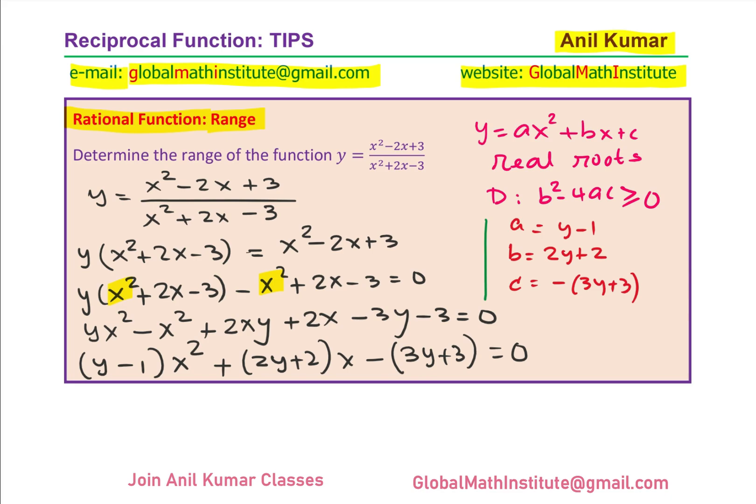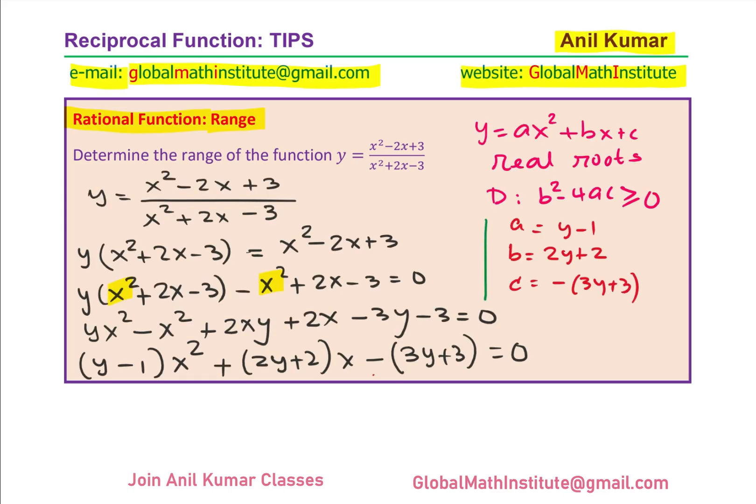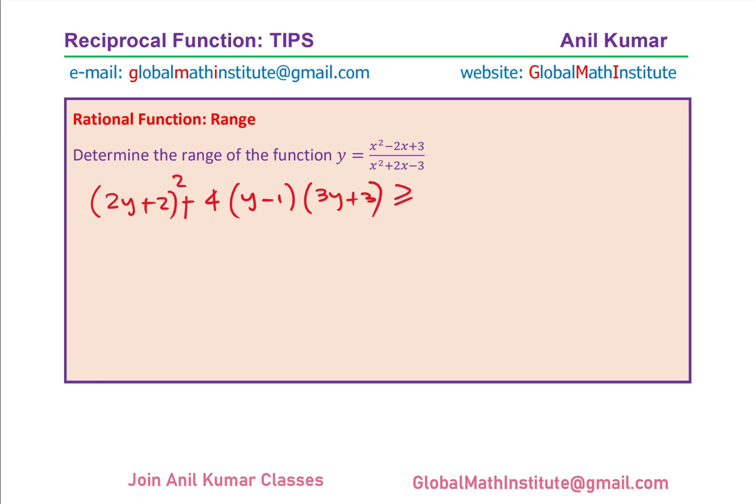So b square minus 4ac means 2y plus 2 whole square. Let me rewrite here. So we have 2y plus 2 whole square minus 4 times the value of a, which is basically y minus 1. And c, which is 3y plus 3 with a negative sign, so it becomes plus. Since we have this with a negative sign here. So we have, we could add this up and now that should be greater than or equal to 0.